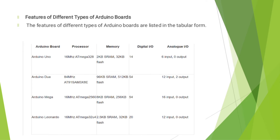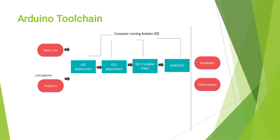Arduino Leonardo: 16 MHz ATmega32U4, 4 KB SRAM and 32 KB flash, 20 Digital Input/Output, and 12 Analog inputs and 0 outputs.